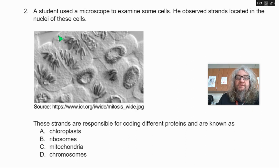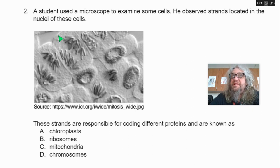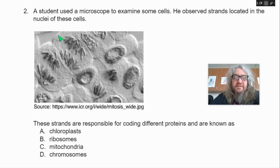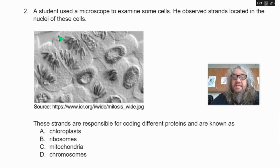Two. A student used a microscope to examine some cells. He observed strands located in the nuclei of these cells. These strands are responsible for coding different proteins and are known as — A, chloroplasts; B, ribosomes; C, mitochondria; D, chromosomes.